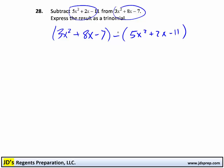So again, as we are subtracting an entire quantity, that is like subtracting each individual piece inside of this. So really we have 3x squared plus 8x minus 7, and we are subtracting the 5x squared, we are subtracting the 2x, and we are subtracting a negative 11, which is making it adding. So now we just have to combine like terms.